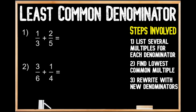Let's start out by listing the multiples of three: three, six, nine, twelve, fifteen, and eighteen. Now let's do the same thing for our multiples of five: five, ten, fifteen, twenty, twenty-five, and thirty.